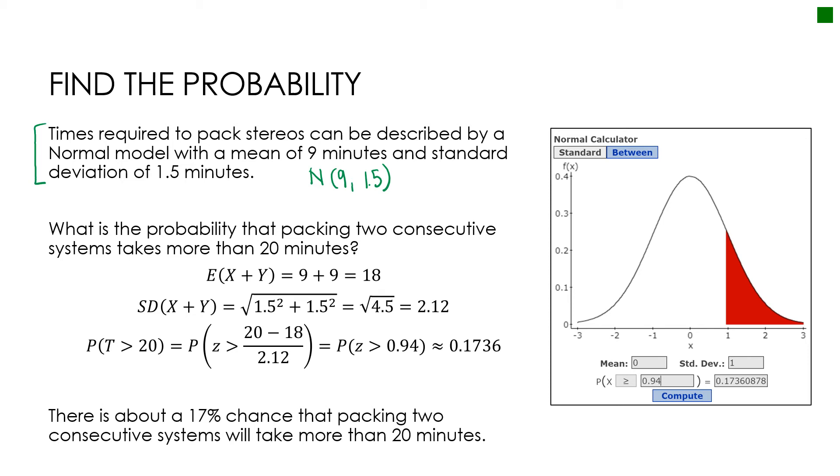And notice here I'm saying what happens when I have two consecutive systems and what's the probability that it will take more than 20 minutes. So essentially, I'm saying, I've got combining random variables, which we just learned how to do in this chapter. So I know if I expect one time to be 9 minutes, then I expect two systems to then take 18 minutes. So that's my mean is 18.